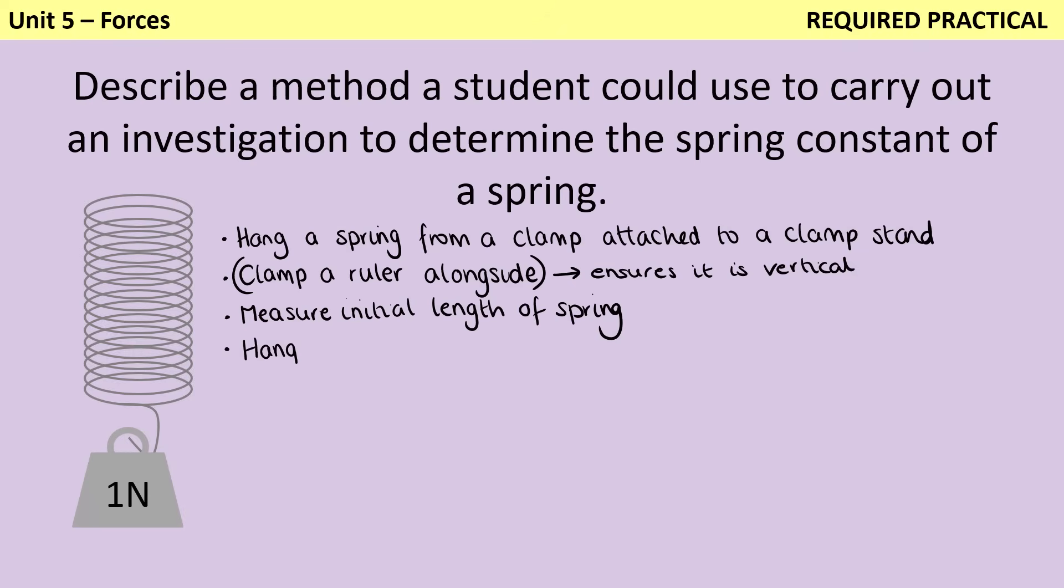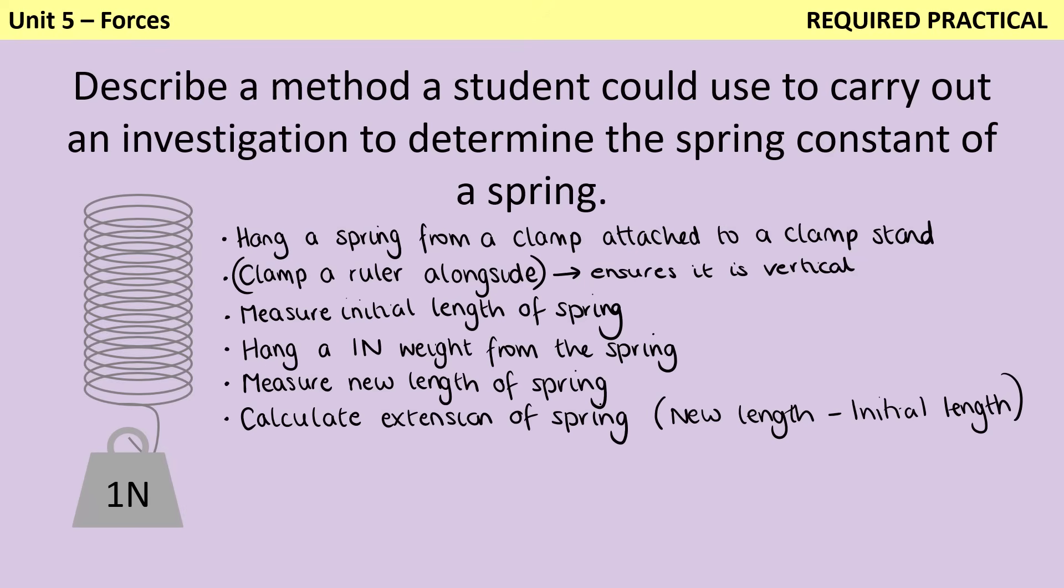You measure the new length of the spring, and then you use that new length together with the initial length to calculate the extension, and you do this by subtracting the original length from the new length. This is repeated several times, and each time that you do you add a further newton. But it's important that when you do this you don't exceed the limit of proportionality, because if we're trying to calculate the spring constant, we need the spring to still be obeying Hooke's law.